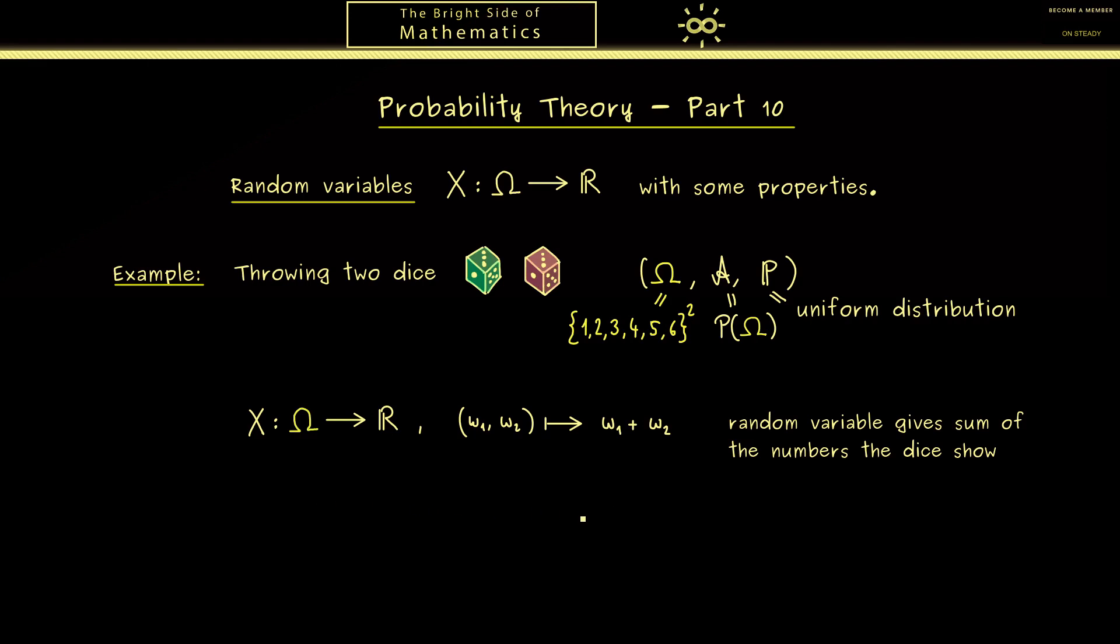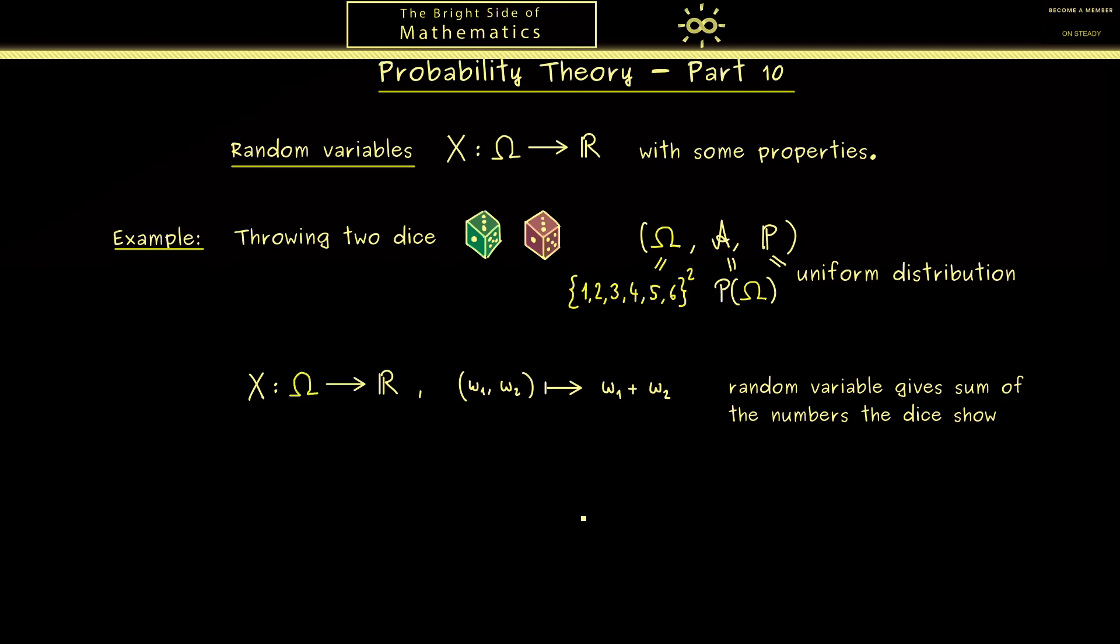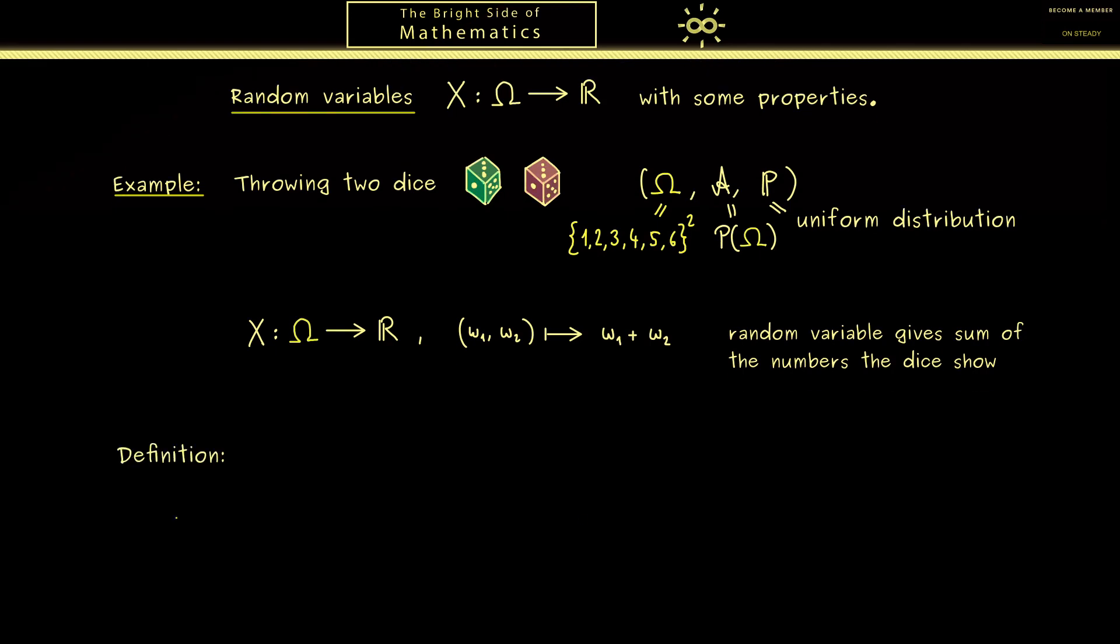However, first I would say we have to give the correct definition now. And as promised, this is the general definition one uses in probability theory. What we need are two spaces we call measurable spaces or event spaces. The first one should be given by a set, a sample space Ω with the corresponding sigma algebra A. And then the second one is given by a set Ω̃ with the corresponding sigma algebra Ã. So you could say we have here probability spaces where the probability measure P is not fixed yet.